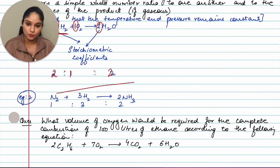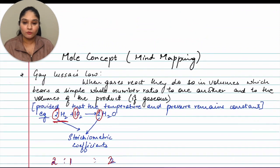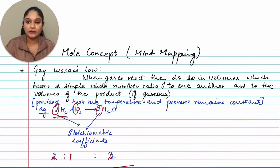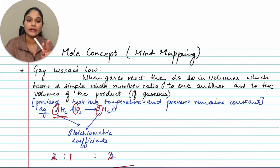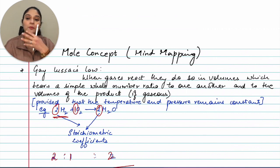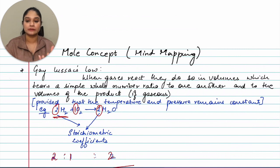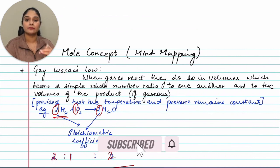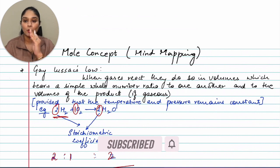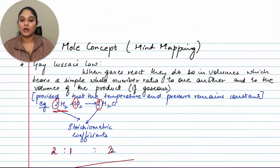So that is what Gay-Lussac's Law states. To read the definition again: when gases react, they do so in volumes which bear a simple whole number ratio to one another and to the volume of the product if gaseous. It is important to mention the condition in your answer — that is, provided that temperature and pressure remain constant.